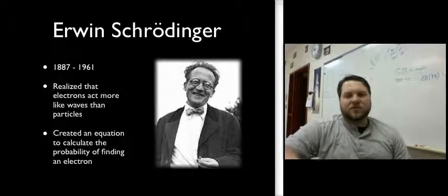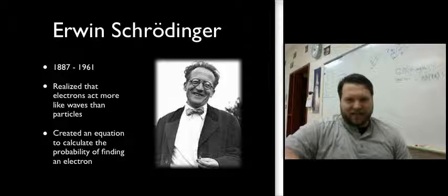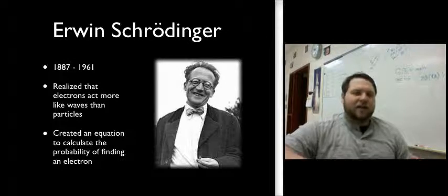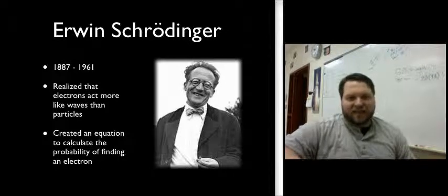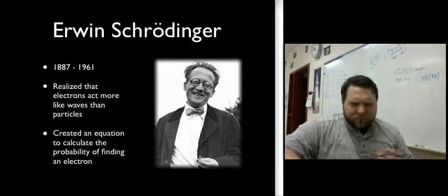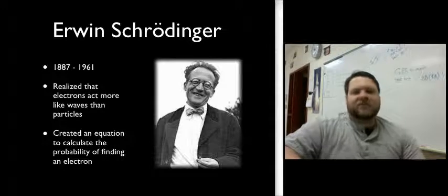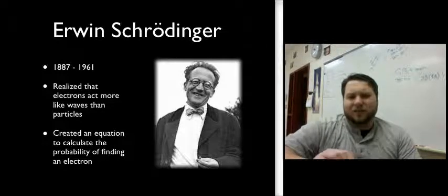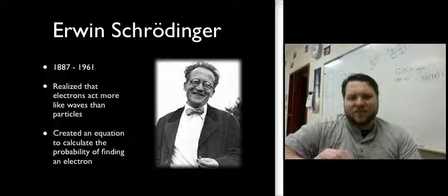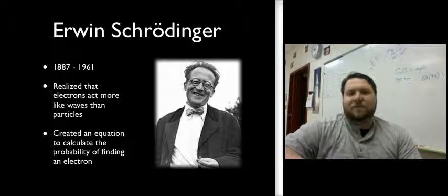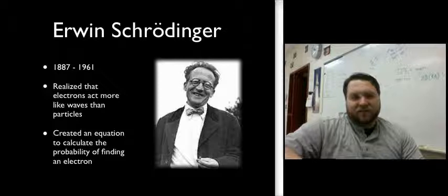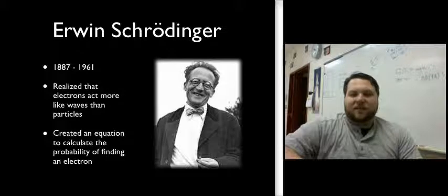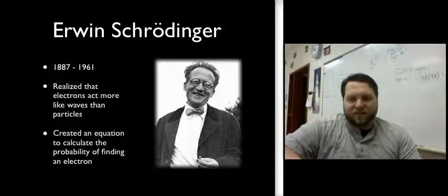Schrödinger developed an equation that allowed you to predict statistically about where an object was going to be by analyzing it as a wave. And by applying that idea to electrons, that is, instead of assuming electrons are like these little marbles that we can see and touch, assuming they behave more like waves, Schrödinger's equation that he discovered allows you to calculate the probability of finding the electron in a certain place.